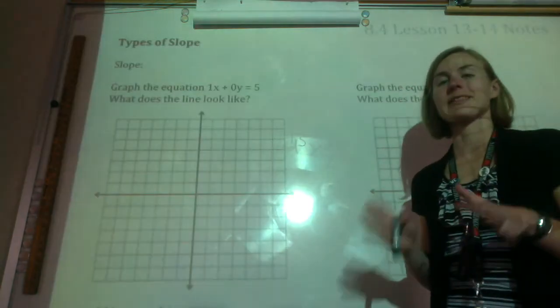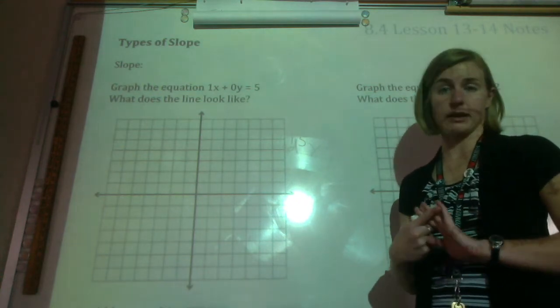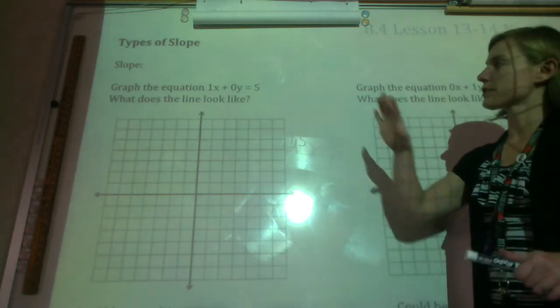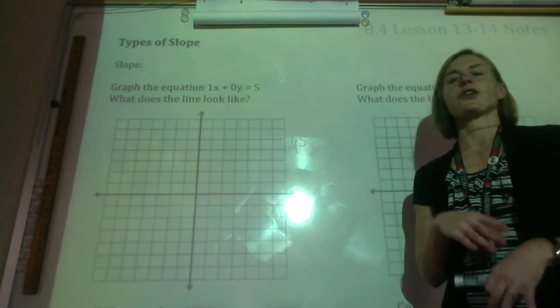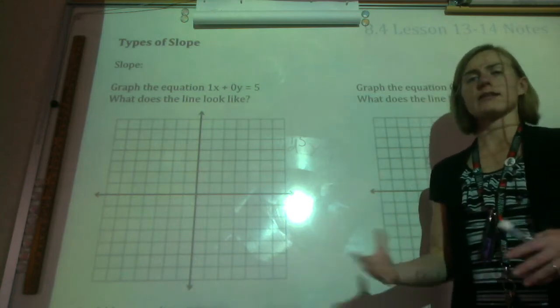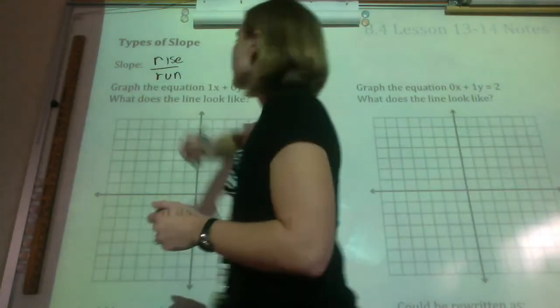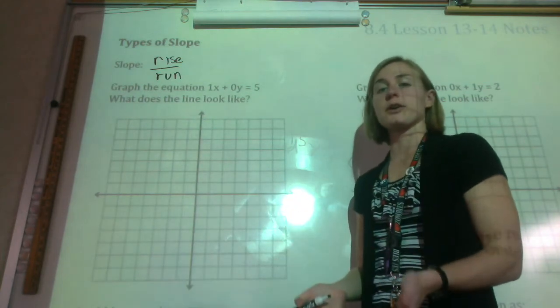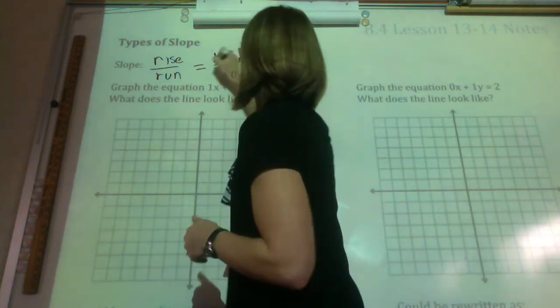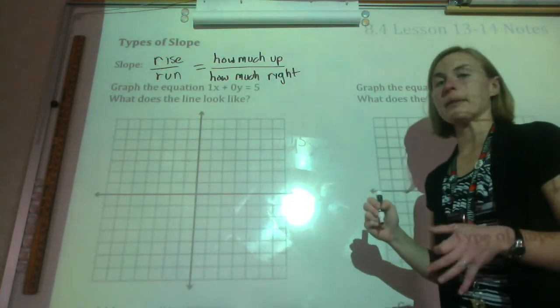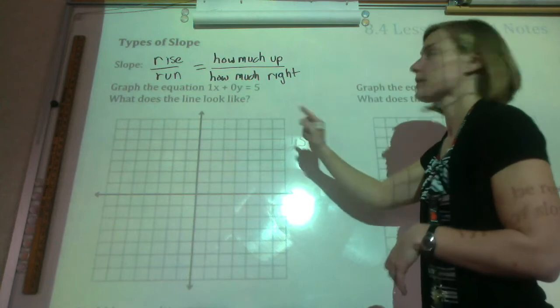We are now going to talk about the different types of slopes. And there's four different types of slope. There's zero, undefined, positive, and negative. And they're actually pretty simple. So let's first get down just an understanding of what slope is. I've already talked about slope as being the rate of change or the steepness of a line. But how do you really calculate slope? Well, slope is the rise over run. And what that really means is how much the line goes up divided by how much the line goes to the right.